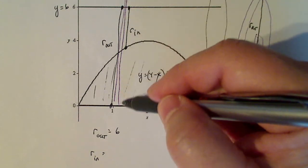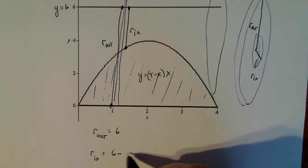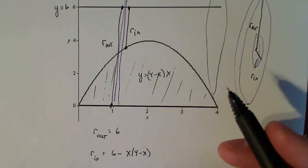So my inside radius is 6 units minus the function value. Six, which is the whole length, minus the function value gives me a radius of the inside. So 6 - x(4-x). Sorry, I keep writing that in reverse. You'll be okay.